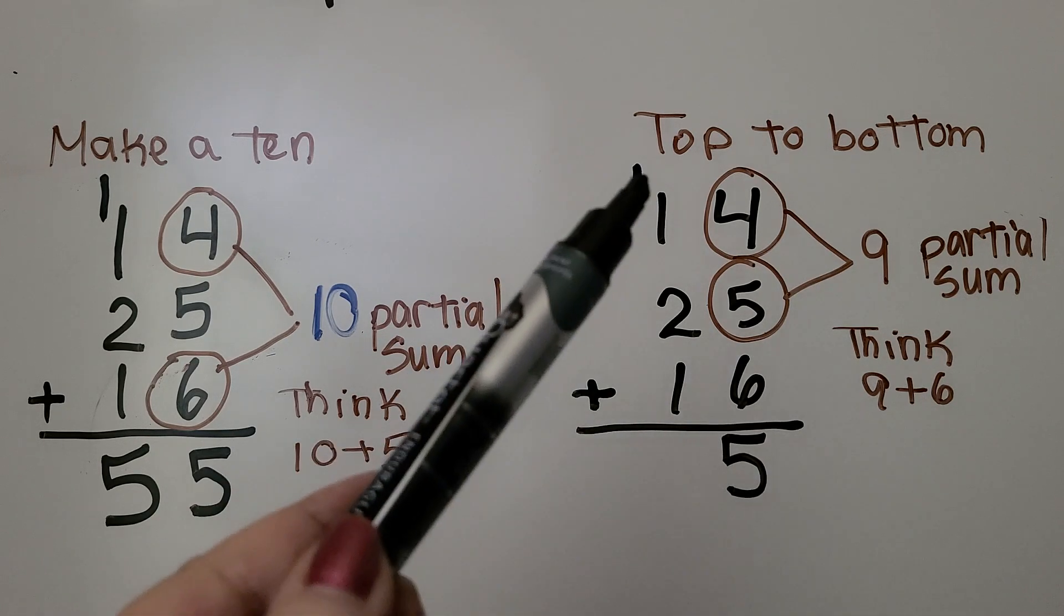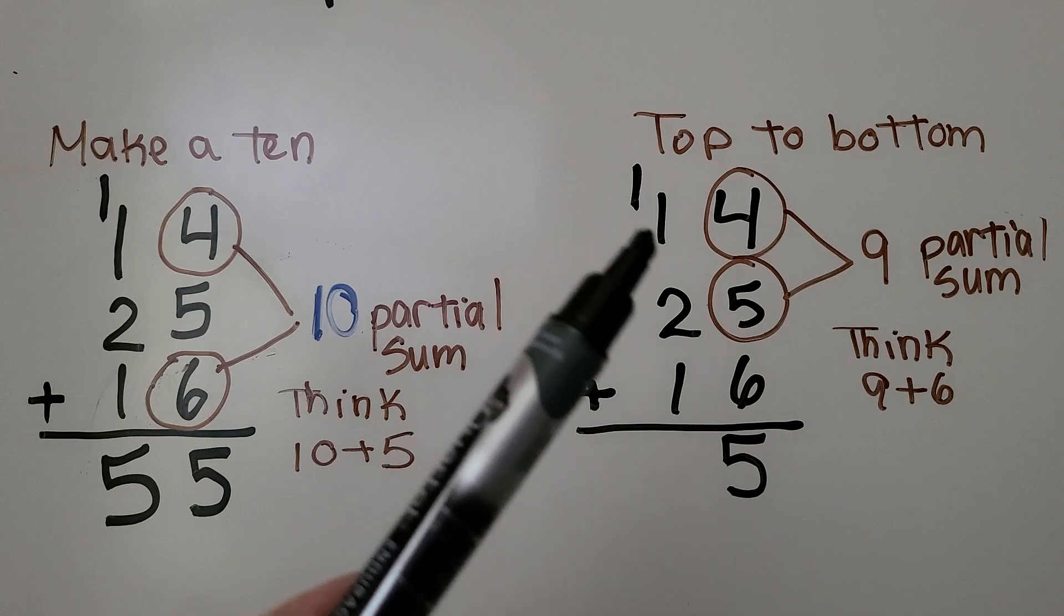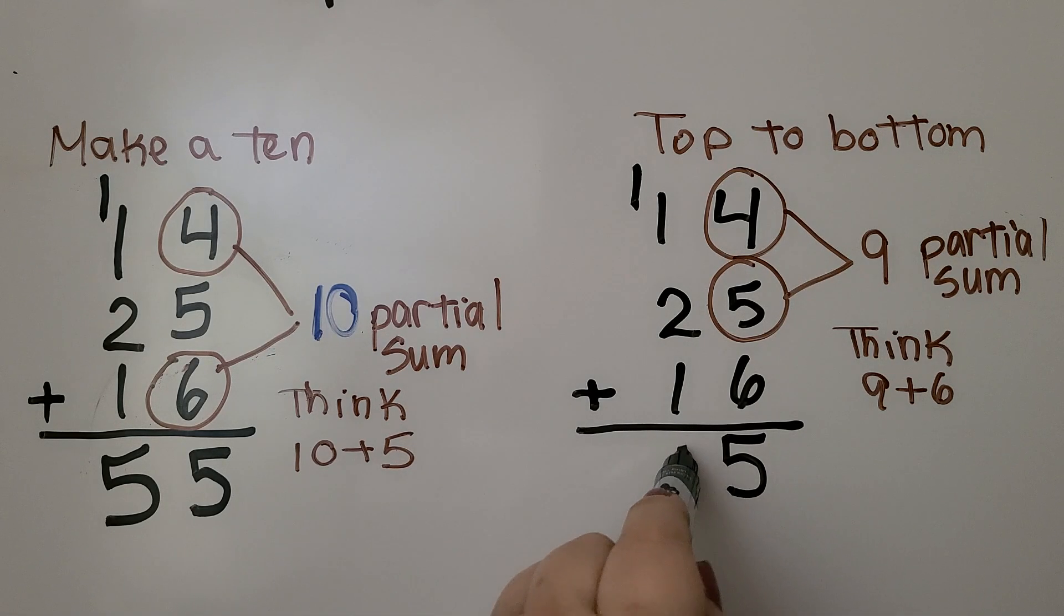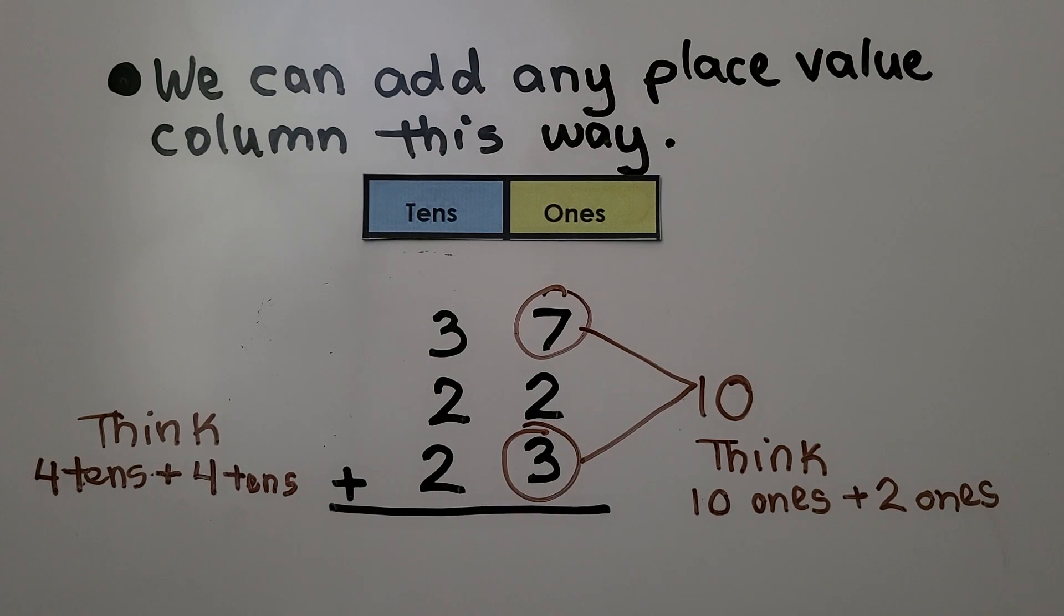We add the tens column. We have 2, 3, 4, 5. So either way we do it, we get the same sum. One way might be easier than the other. We can add any place value column this way.